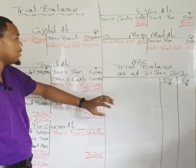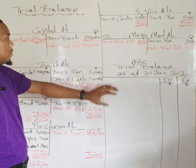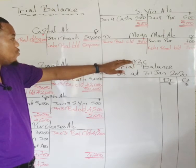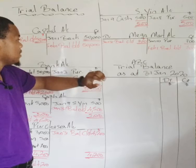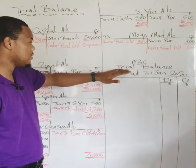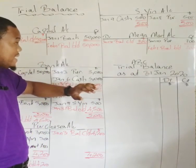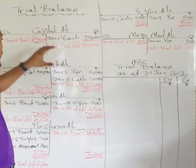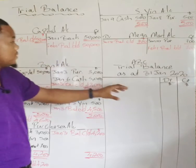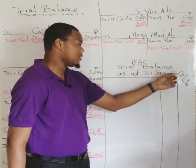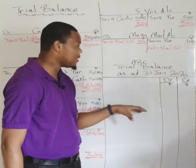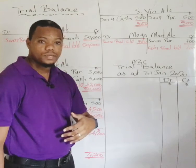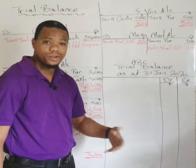When you are extracting a trial balance, the first thing you do is draw up the heading — the heading is very important. You put the name of the business owner, which is ABC, then the name of the statement — Trial Balance — and then the date, stated as 'as at.' In this case it is the 31st of January 2020, because the trial balance is extracted at the end of the accounting period.